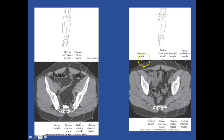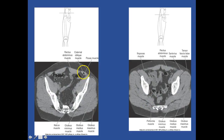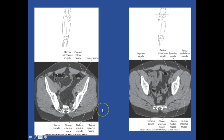Looking at CT - here is your iliopsoas with your rectus abdominis, sartorius there, and your tensor fasciae latae there. You have your minimus, medius, maximus with your piriformis on the inside medially. On this image, you can see your rectus abdominis with your external oblique muscle. You've got your psoas, your iliacus, and then your glutes. So you can see the pectineus has been cut, and you can see underneath you have your adductor magnus muscles running medial to your femur. So here we have your vastus lateralis, intermedius, and medialis.